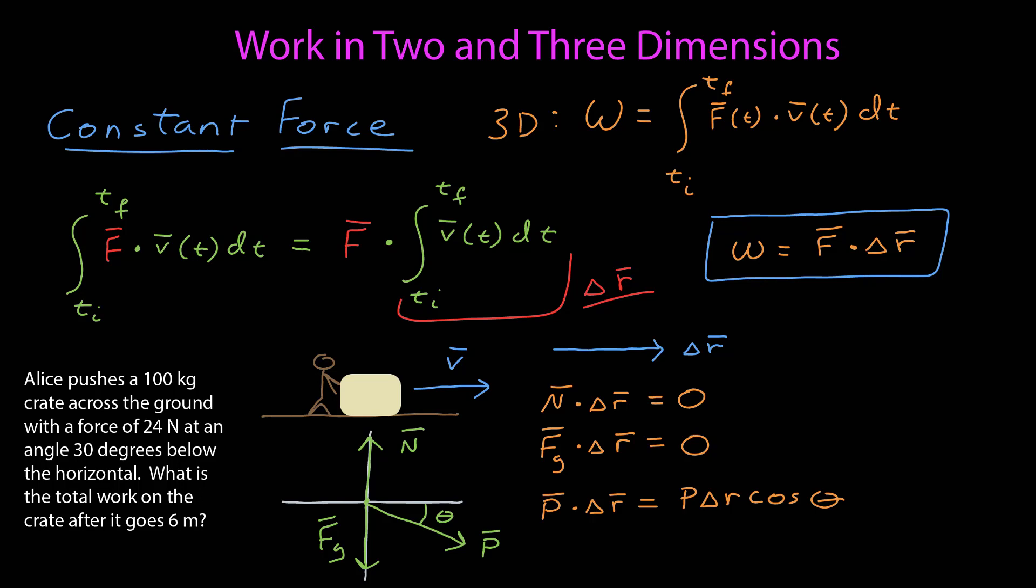And now the dot product between the pushing force and the displacement vector is going to be the magnitude of the pushing force times the magnitude of the displacement vector times cosine theta, where here theta is the angle between the vectors tail to tail. So I do have to be careful about that. If I just translate my displacement vector down to put it tail to tail with my pushing force vector, I see that that angle theta is exactly the angle between the vectors tail to tail, which is convenient.